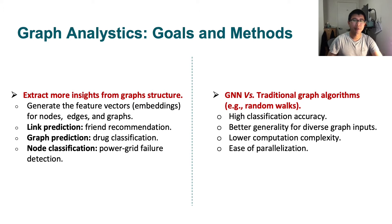There are some important applications. For example, we can use link prediction for friend recommendation in social networks, graph prediction for drug classification, and node classification for power grid failure detection.